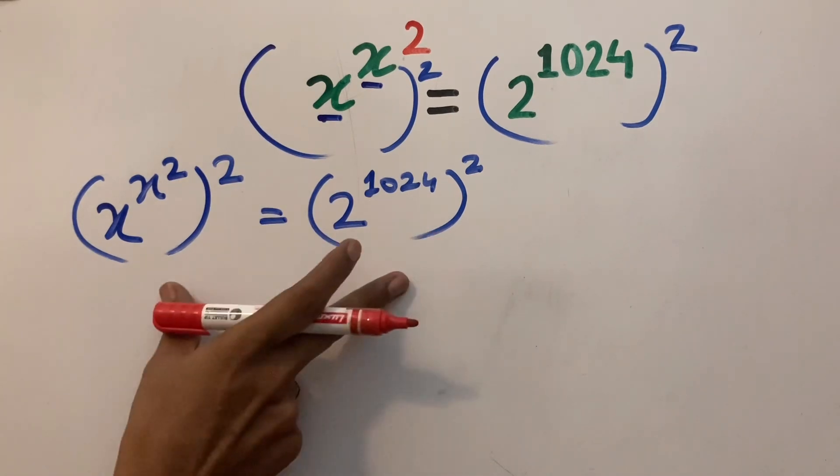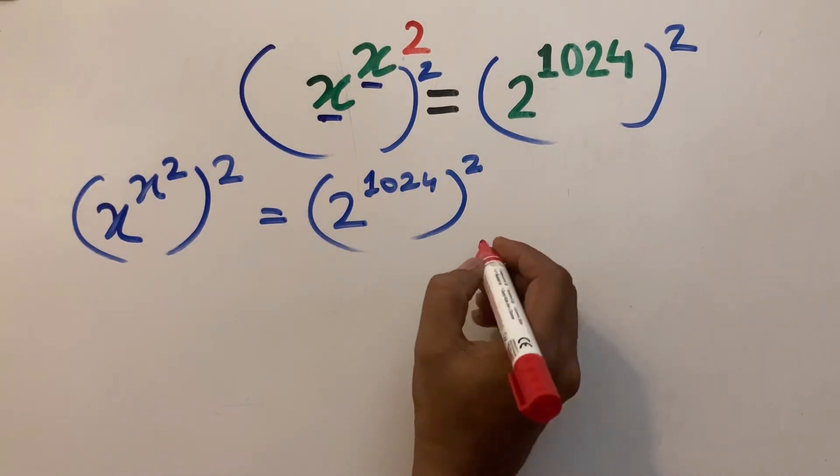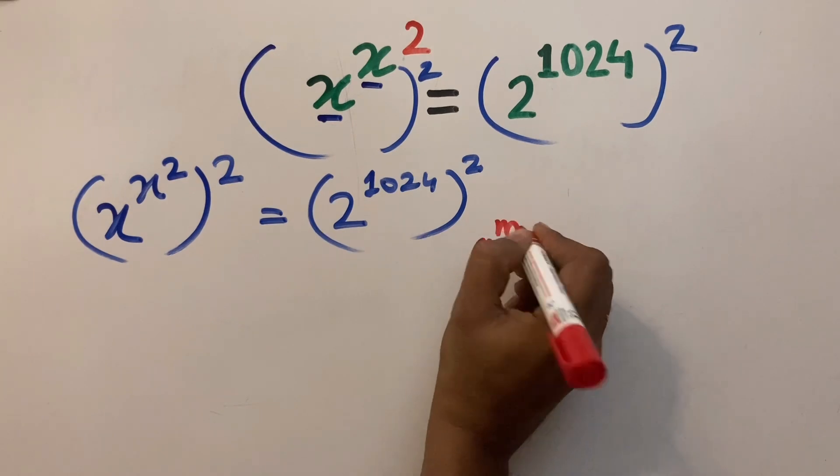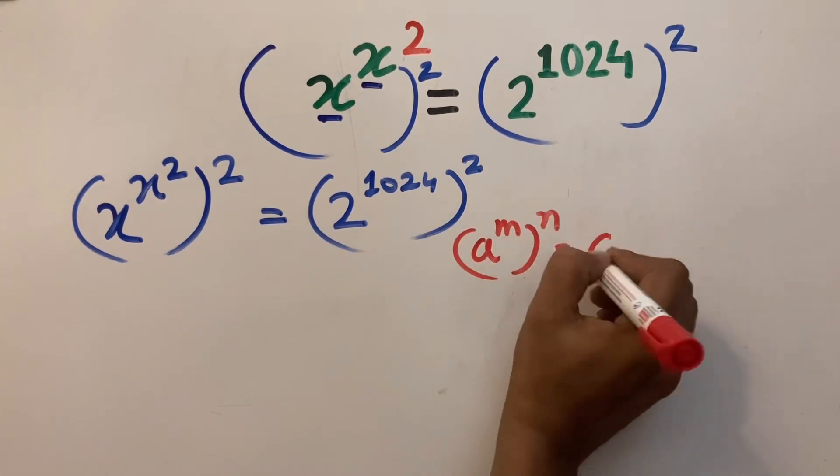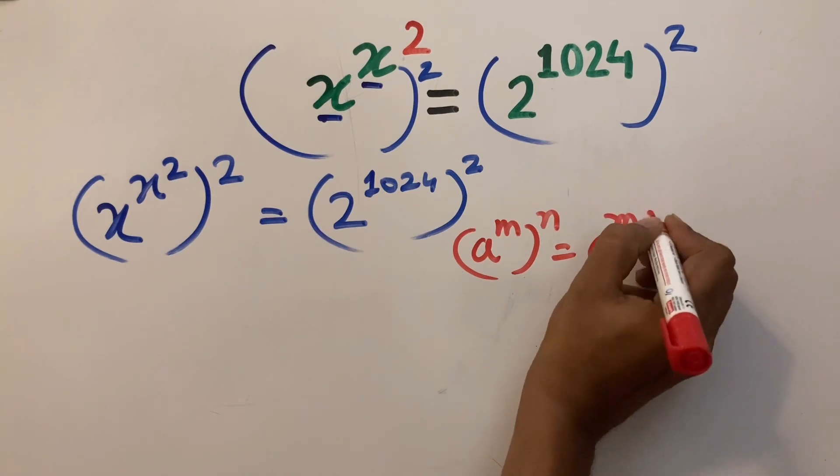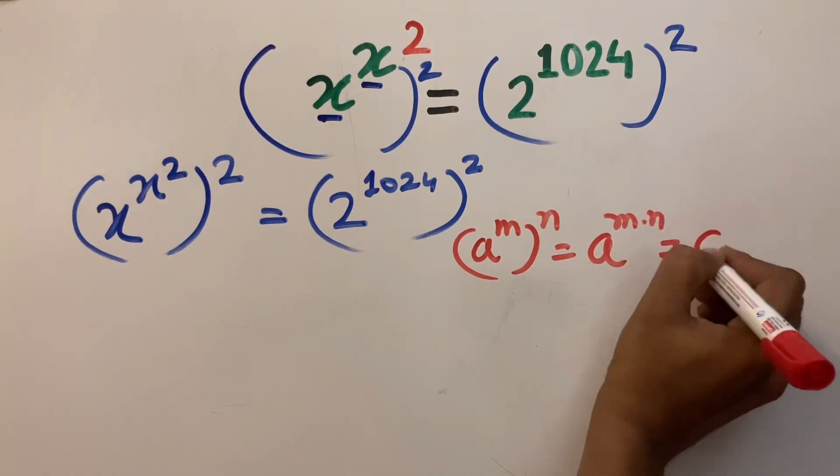Now, I am going to use a formula of exponents: a to the power m to the power n equals a to the power m times n, which is also equal to a to the power n to the power m.